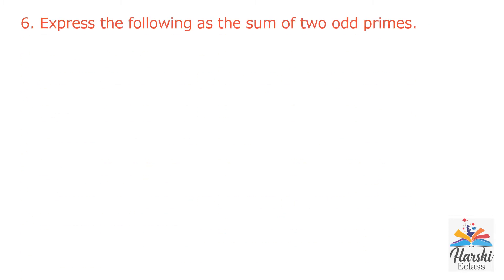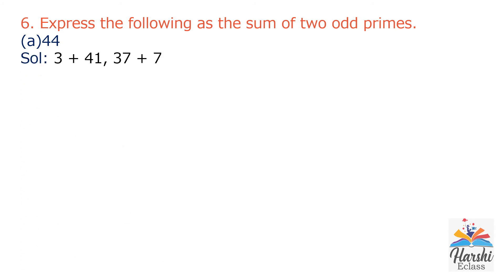Question 6: Express the following as a sum of 2 odd primes. Part A: 44. 44 is a composite number. We need to express it as a sum of 2 odd prime numbers. We know that except 2, all remaining prime numbers are odd. We can write it as 3 plus 41, or we can write it as 37 plus 7. Both 3 and 41 are prime, and both 37 and 7 are prime.